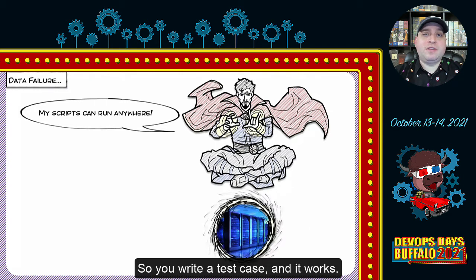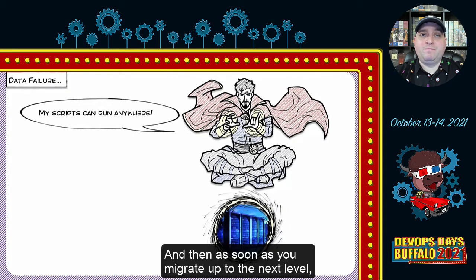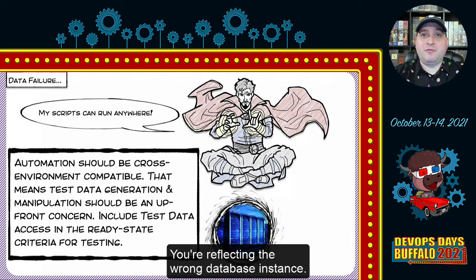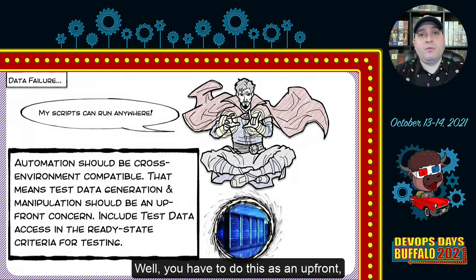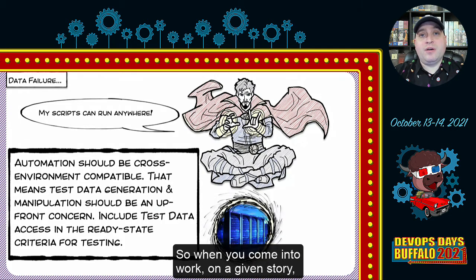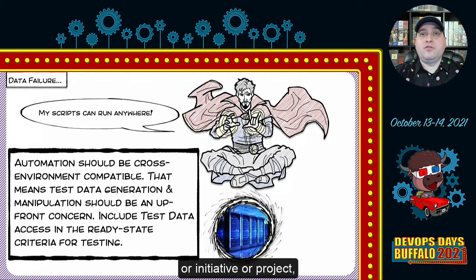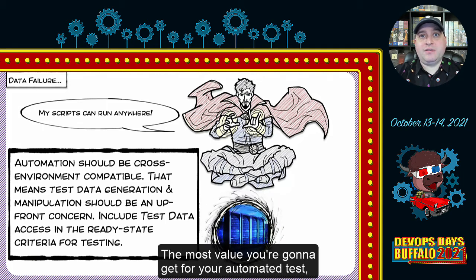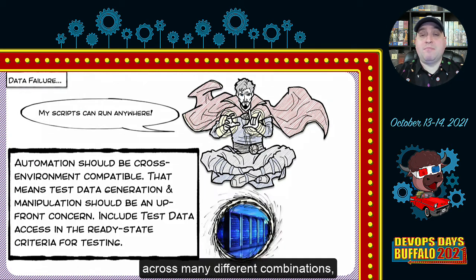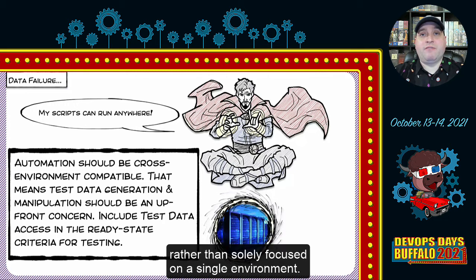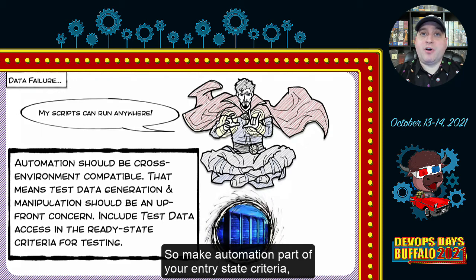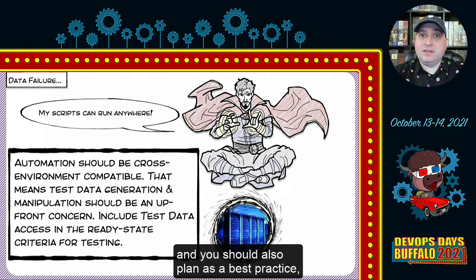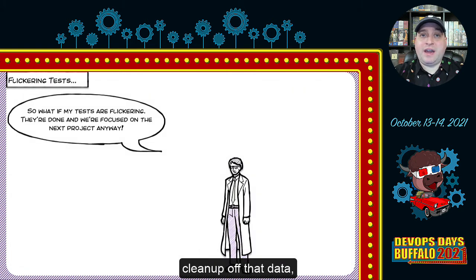The second common challenge is failing with data. You write a test case that works in one environment, and then as soon as you migrate up to the next level and deploy your code, your test cases all fail — because you no longer have control of your data and you're reflecting the wrong database instance. The solution is to make data access an entry state criteria for your work, not an afterthought. The most value comes from tests you can write once and execute across many different environments. Query your data dynamically at runtime, and plan cleanup of that data after test execution.